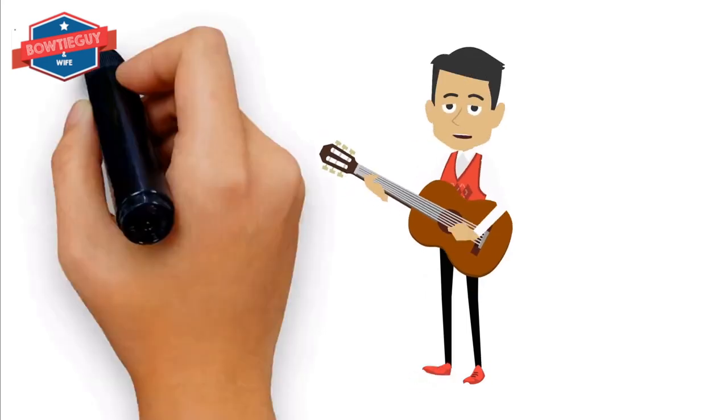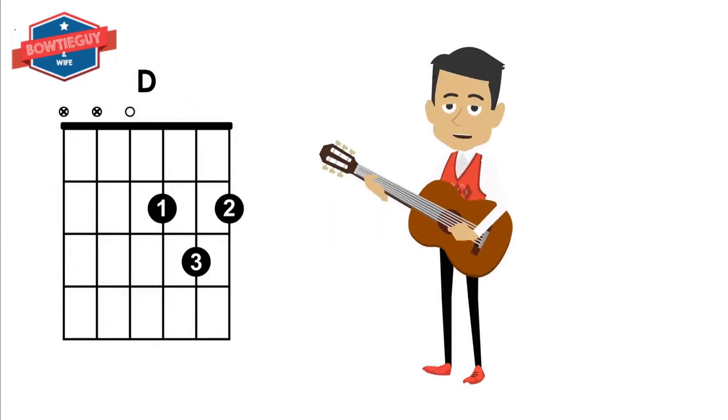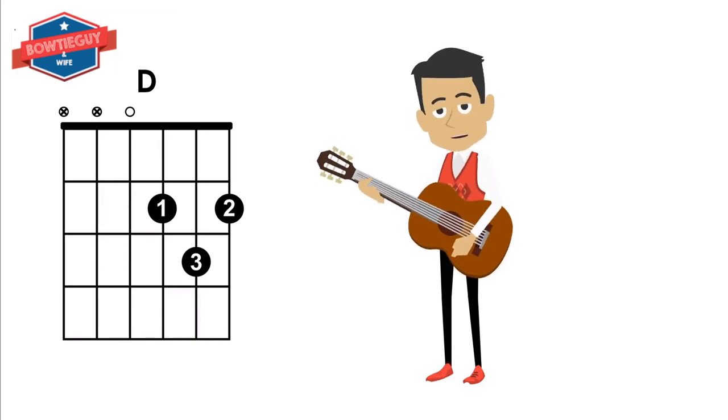The D chord is a pretty chord. Take your middle finger and put it on the high E string on the second fret. Take your pointer finger and put it on the G string on the second fret. Then take your ring finger and put it on the B string on the third fret. Now remember, if it has an open circle, you can strum. So we are not going to strum the top two strings, the E string and the A string. Let's give it a try.